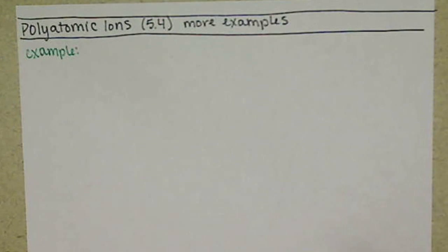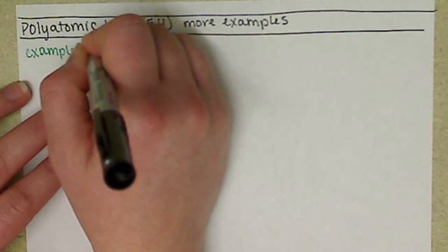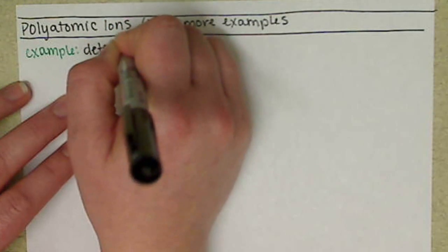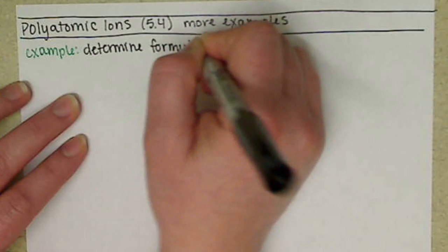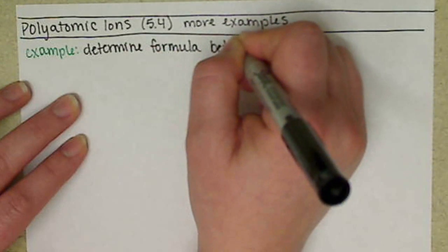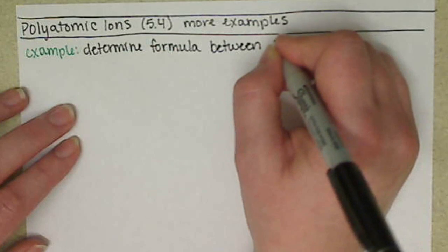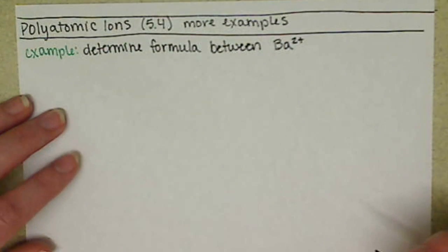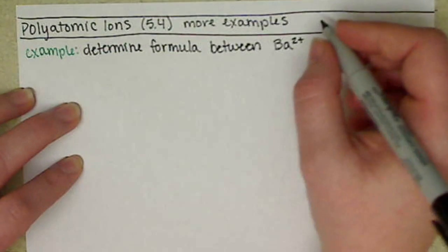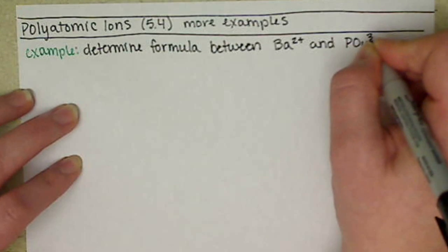If we look at another polyatomic example and we want to determine the formula, let's choose between barium ion, which is barium 2+, it's in group 2A, and let's do phosphate, PO4 3-.